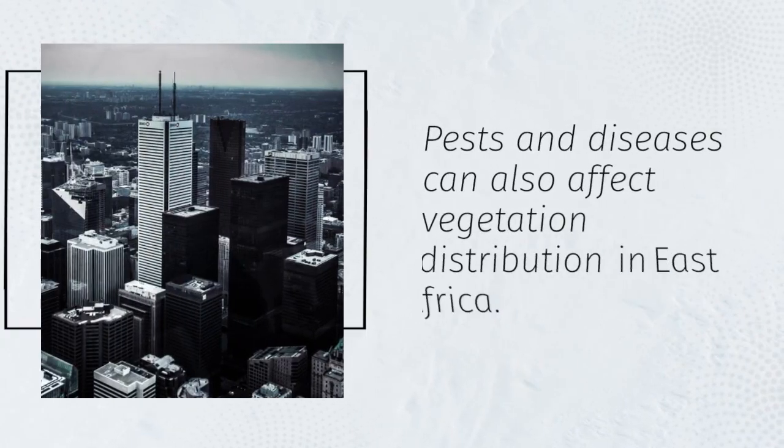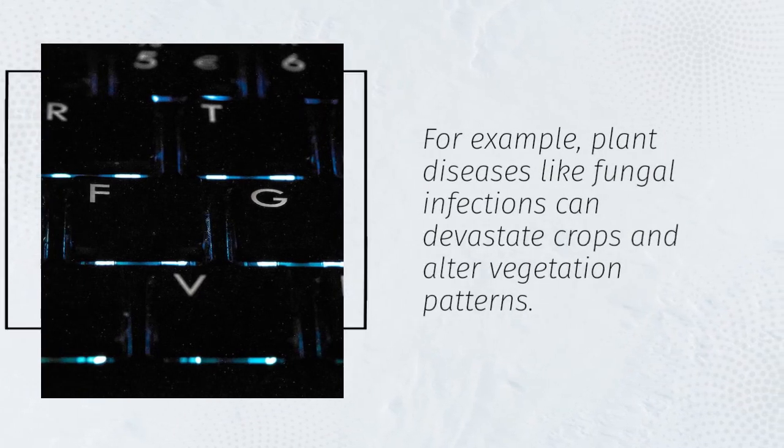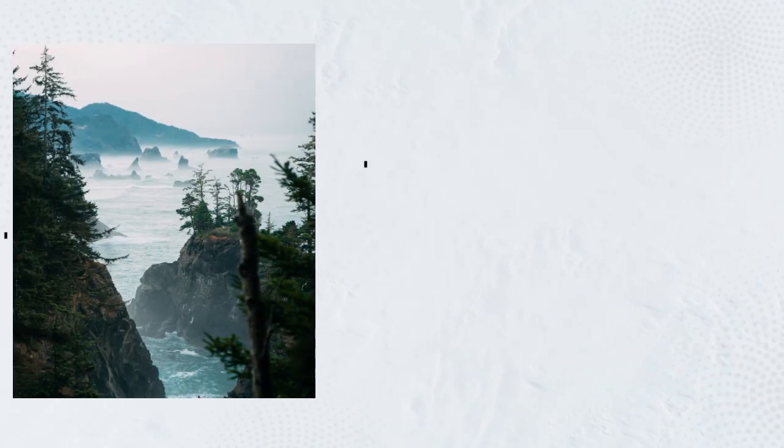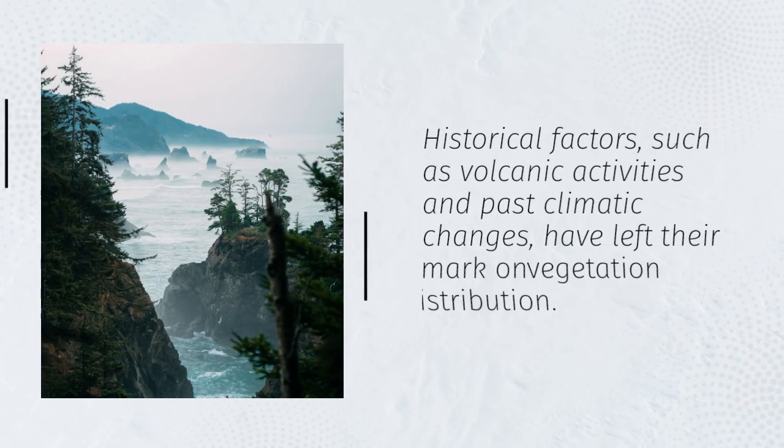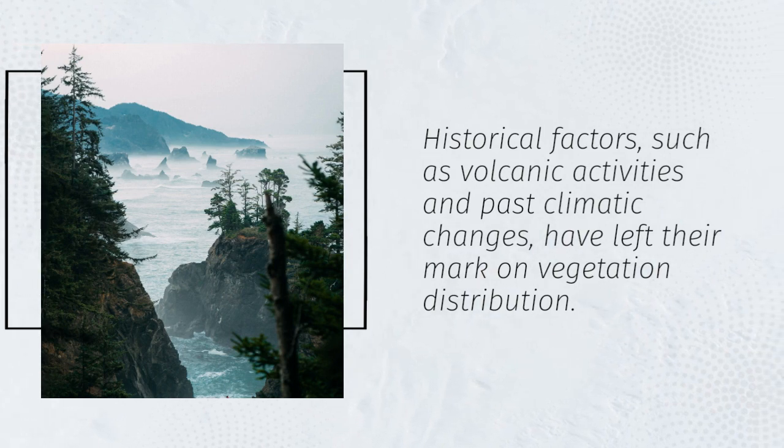Pests and diseases can also affect vegetation distribution in East Africa. For example, plant diseases like fungal infections can devastate crops and alter vegetation patterns. Historical factors, such as volcanic activities and past climatic changes, have left their mark on vegetation distribution.